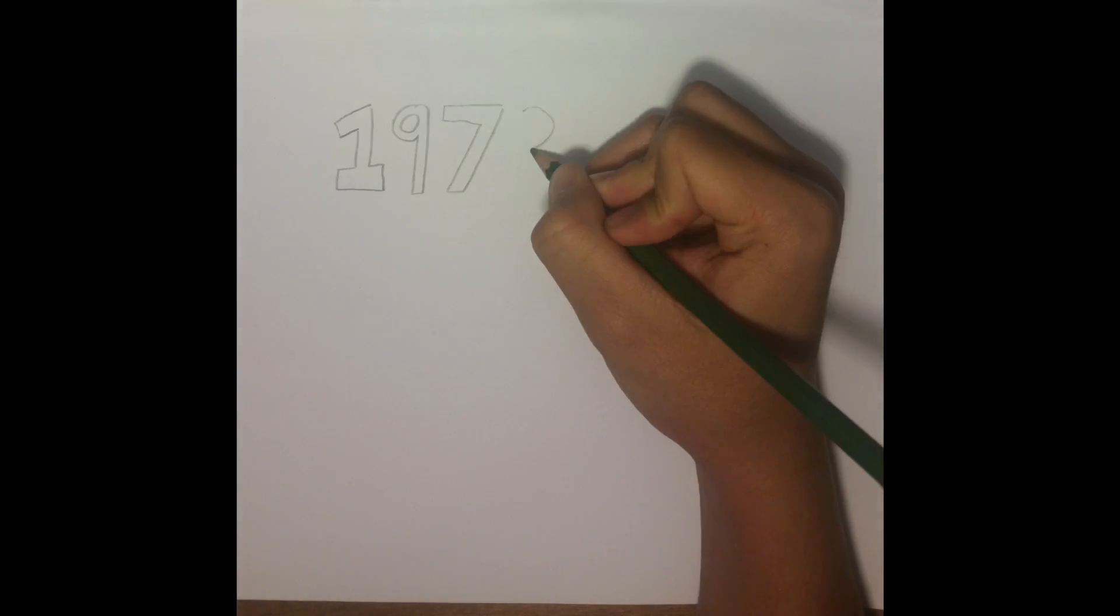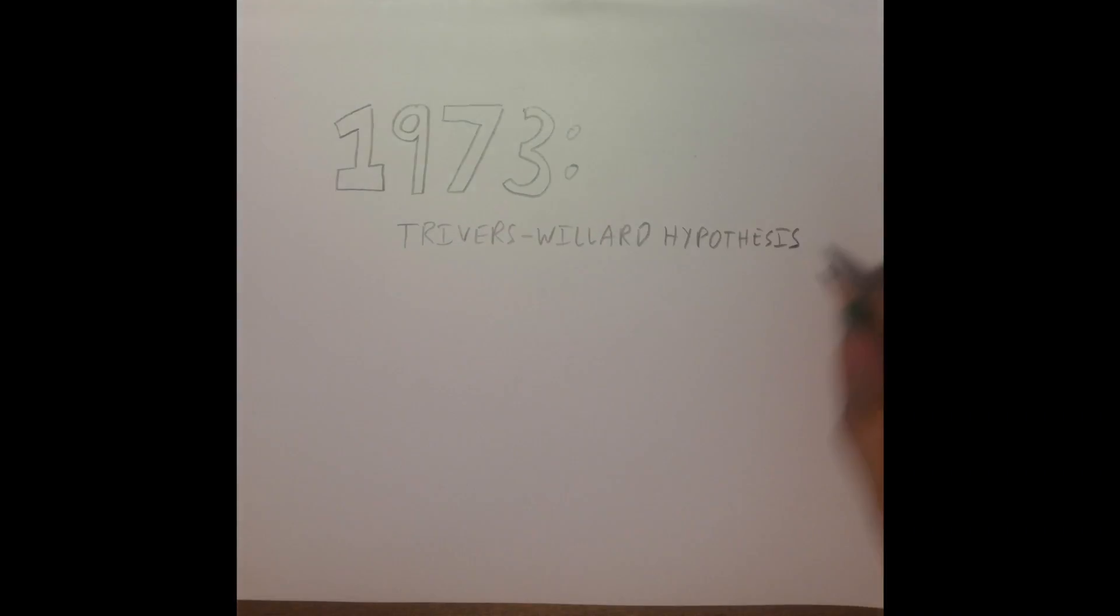In 1973, Trivers and Willard came up with their own hypothesis for deviations from Fisher's Principle, with an explanation also relating to natural selection and parental expenditure. Their argument goes like this.